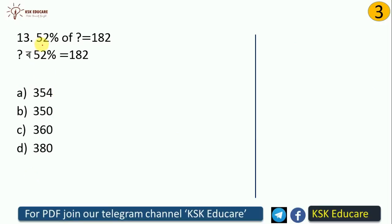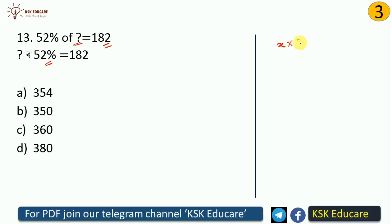Now a follow-up: if 52% of some number equals 182, we need to find that number. Let the unknown be X. So the equation is 52% of X equals 182.